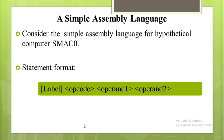We consider a simple assembly language for a hypothetical computer SMAG0. In this language, the statement has the following format: the optional label, followed by opcode, followed by operand 1 and operand 2. So it consists of four parts: label, opcode, operand 1, and operand 2.